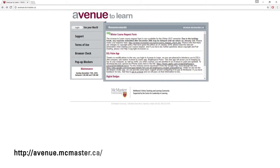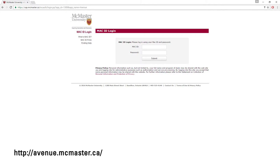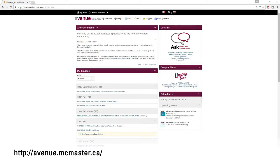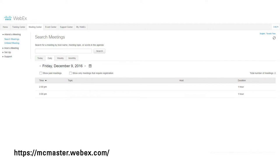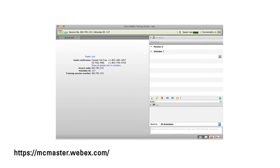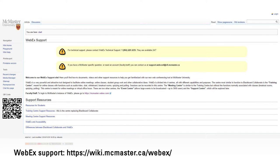Another thing you really should do is familiarize yourself with the online resources available to you. The first and maybe the most important is something called Avenue to Learn, which is our online learning management system. You will have a course website on Avenue to Learn for each of your courses, and I would encourage you to explore those courses. There is some information available on McMaster's website about Avenue to Learn. If you're taking online courses, I would also encourage you to familiarize yourself with WebEx, because WebEx is the platform that we use for delivering our online courses.